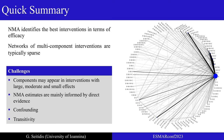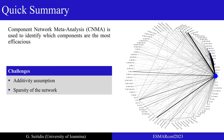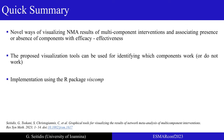To identify the most promising components, component network meta-analysis is commonly used. However, component network meta-analysis assumes additivity for the components' effects in multi-component interventions. This is a strong assumption and sometimes hard to defend — especially when the network is sparse — because the summary estimates are mainly informed by direct evidence and are prone to confounding. The objective of this work was to develop novel ways of identifying the most promising components and exploring their behavior, by associating the presence or absence of components with efficacy or effectiveness.